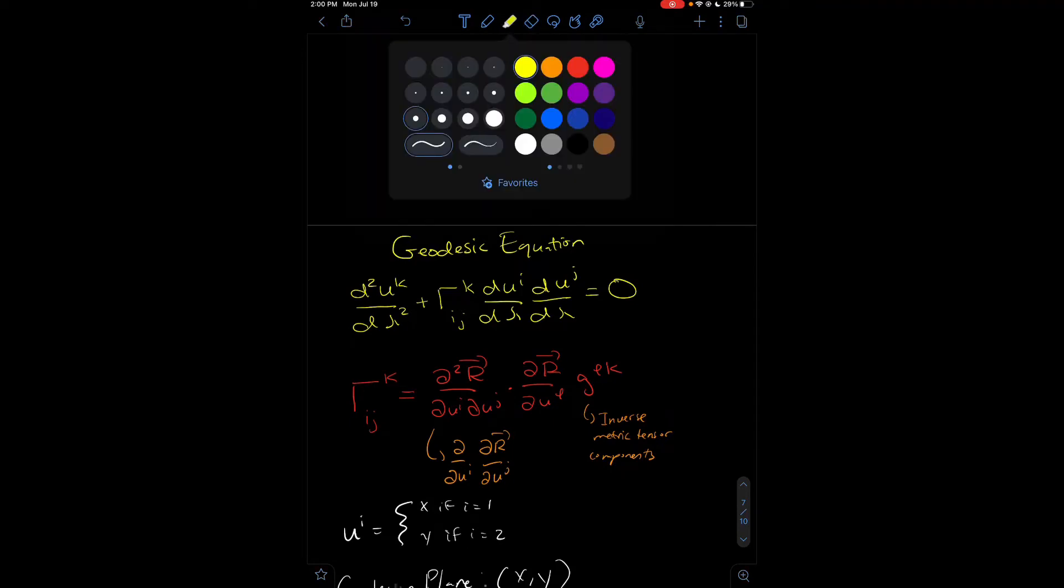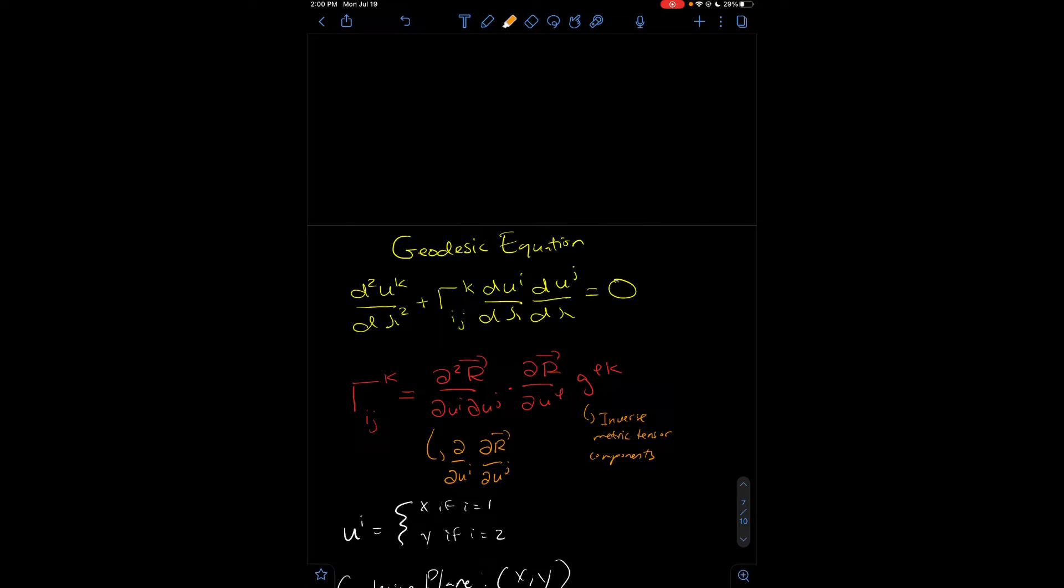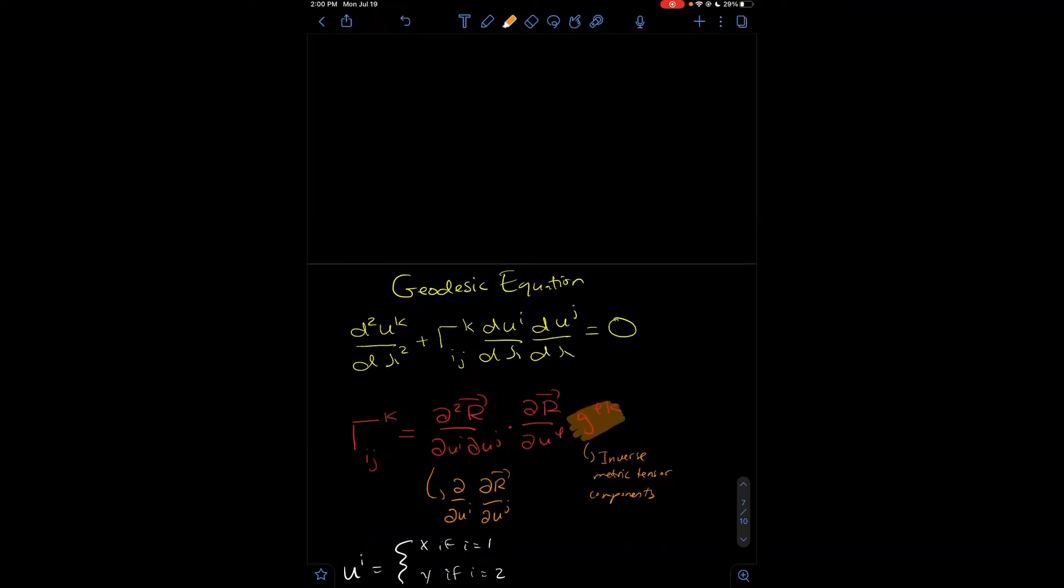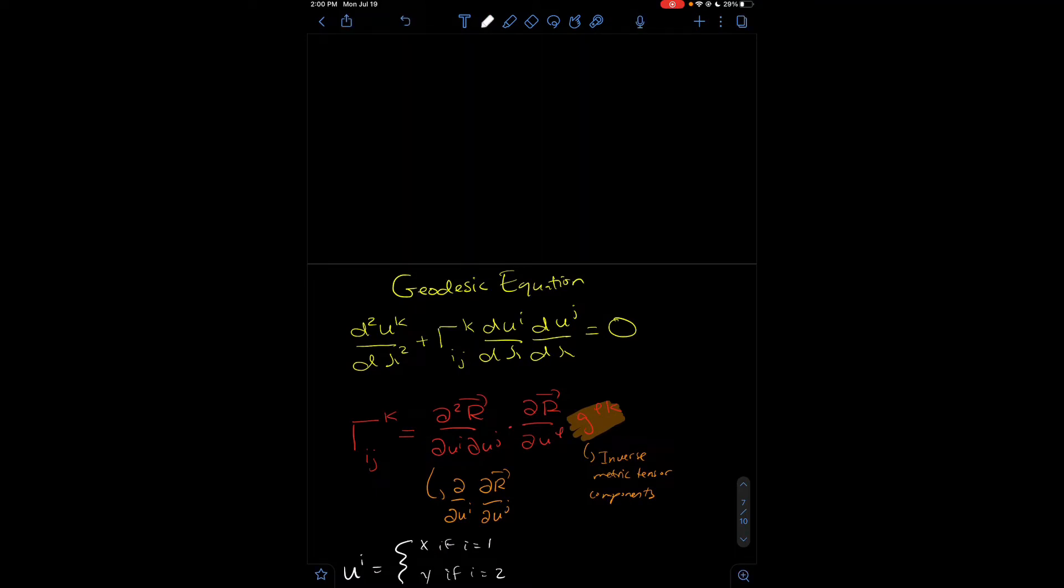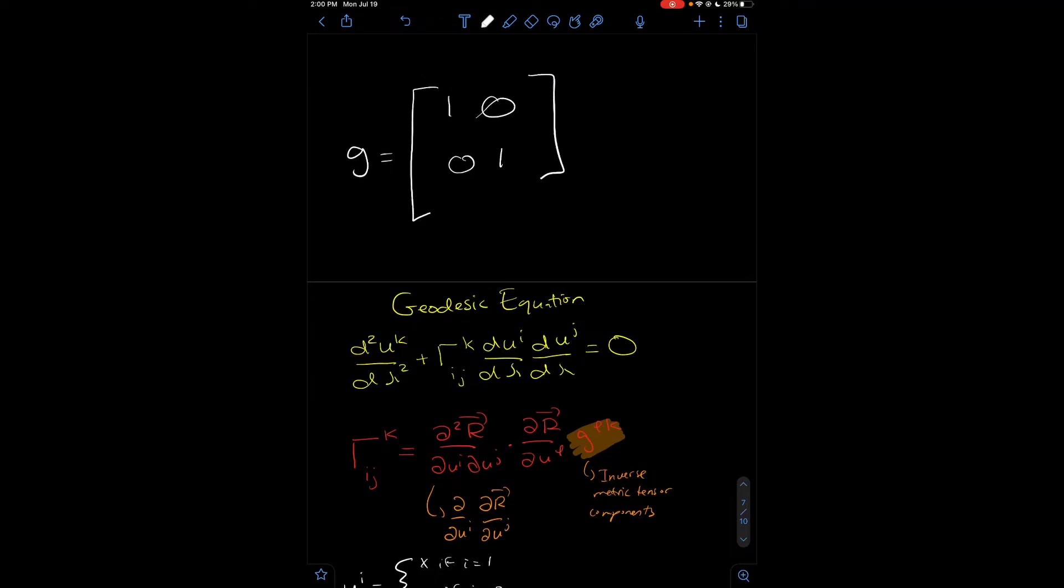So, let's begin. To solve it, we first need to actually know what the metric tensor components are. So, here we see the metric tensor components. Now, note that the metric tensor for Cartesian coordinates is just 1, 0, 0, 1, the identity metric by definition.